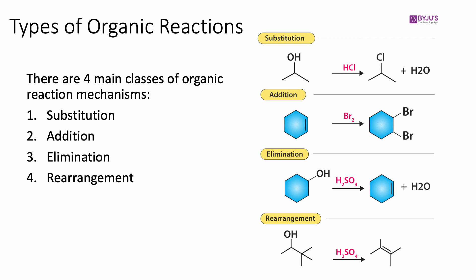In a substitution reaction, one group is replaced with another. The OH group on the reactant side has been replaced by a Cl group on the product side. In addition, there's a double bond that reacts with a reagent — Br2 in this case — to add a bromine across each of the atoms in the double bond, so the bromine atoms have been added to the molecule.